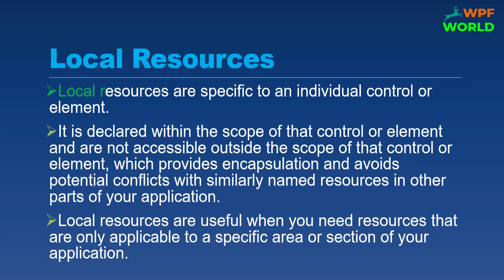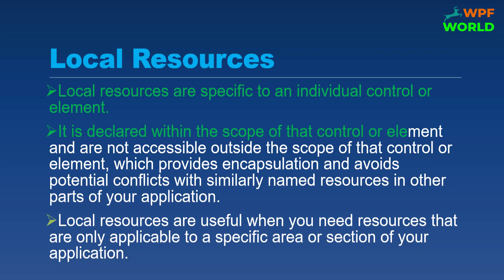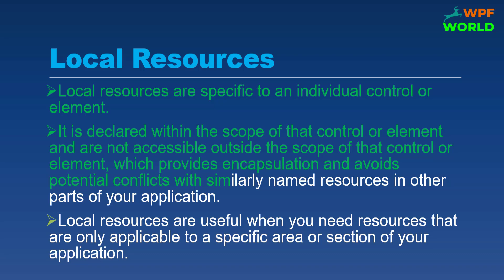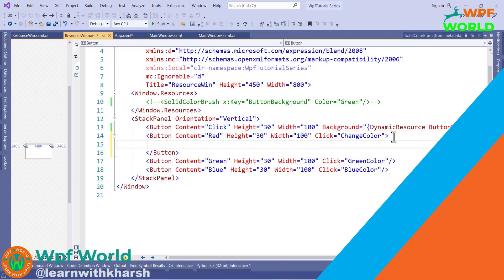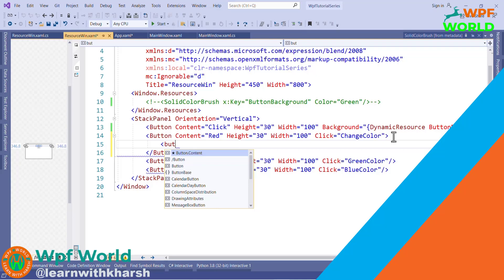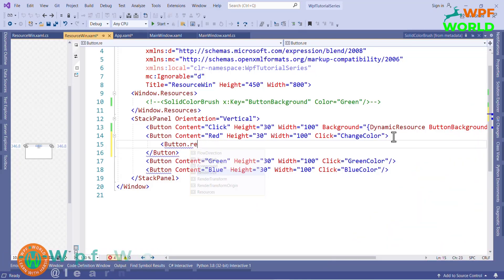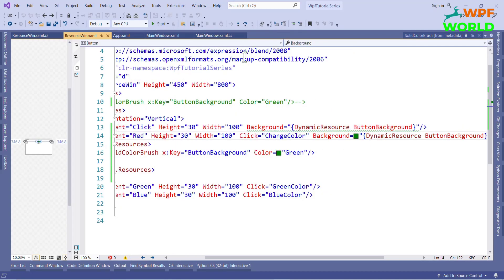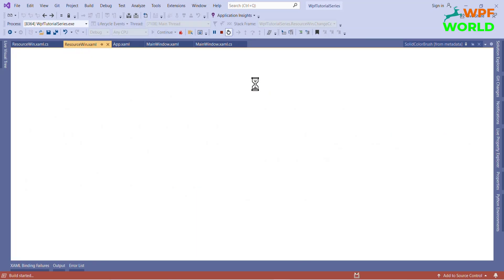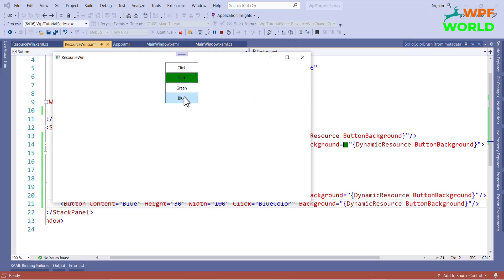What are local resources? Local resources are specific to an individual control or element. They are declared within the scope of that control or element and are not accessible outside of it, which provides encapsulation and avoids potential conflicts with similarly named resources in other parts of your application. Local resources are useful when you need resources that are only applicable to a specific area or section of your application. Let's see with an example. I want to define local resources for the red button, so I will use Button.Resources with SolidColorBrush. This resource is available only for that particular button, so the button color will be green and it applies only to the red button.